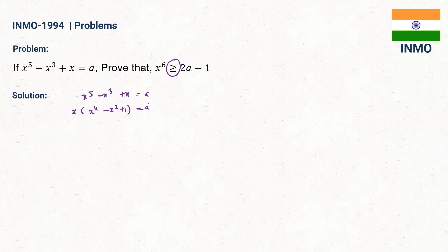And to do the reverse approach, let's take x^6 ≥ 2a - 1. So we can write this as x^6 + 1 ≥ 2a. Now what we will do is factorize x^6 + 1 in terms of x^4 - x^2 + 1.